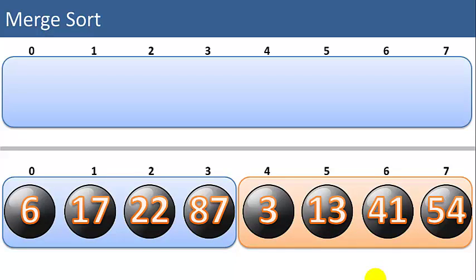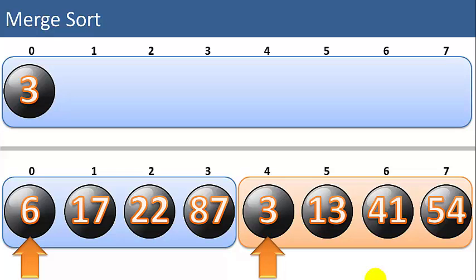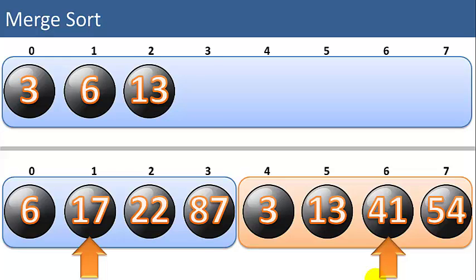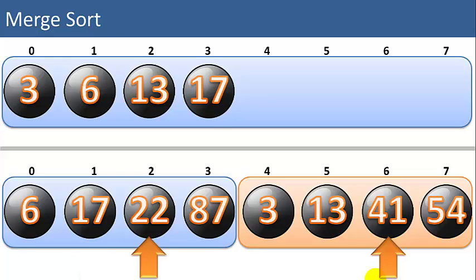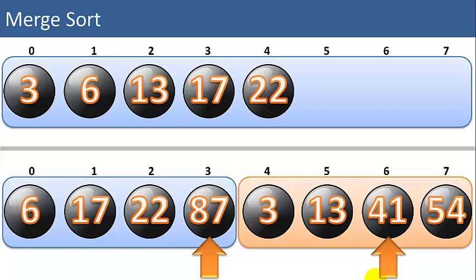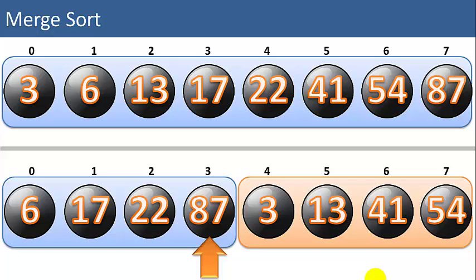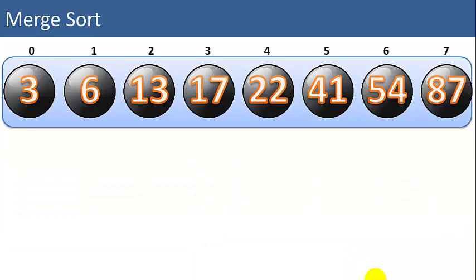We've got one more merge step to combine these into one list of 8 items. We compare 6 to 3 — 3 is smaller. Then 6 to 13 — 6 is smaller. Then 17 to 13 — 13 is smaller. Then 17 to 41 — 17 is smaller. Then 22 to 41 — 22 is smaller. Then 87 to 41 — 41 is smaller. Then 87 to 54 — 54 is smaller. Then we move 87 up. Now we're done. So that is how a merge sort works — we now have one sorted list of 8 items.